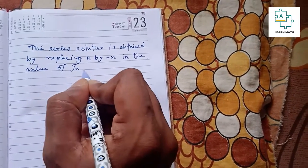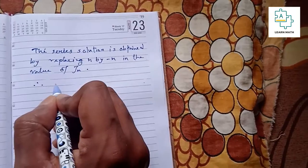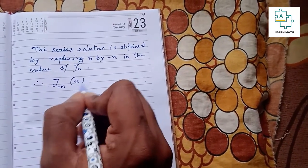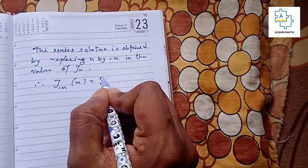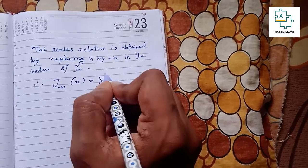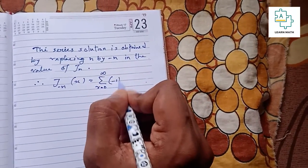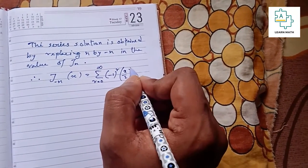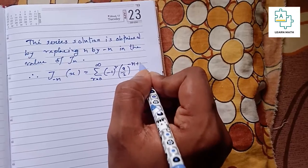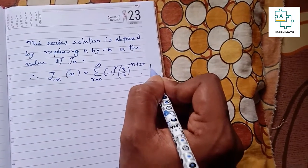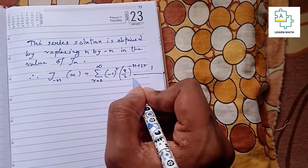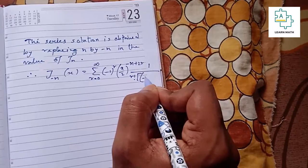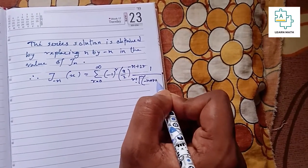So J_{-n}(x) equals summation r equals 0 to infinity: (-1)^r times (x/2)^(-n+2r) divided by r factorial times (-n+r+1) factorial.